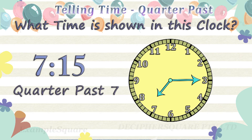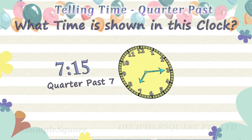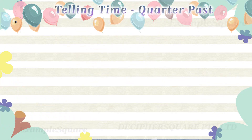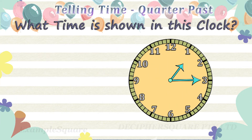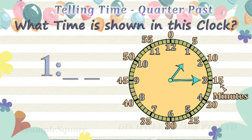What time is shown in this clock? The hour hand is pointing in between 1 and 2, so the time is 1 hour and some minutes. The minute hand is pointing at 3, referring to 15 minutes. The time is 1:15, that is 15 minutes past 1.